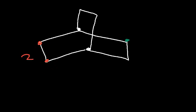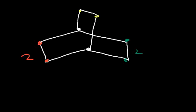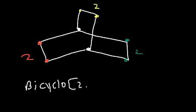It's not very difficult to name bicyclic compounds. Let's try one final example. On the left side we have two carbons, two on the right, and two in the top portion between the two bridgehead carbons. So this is going to be called bicyclo[2.2.2]octane.